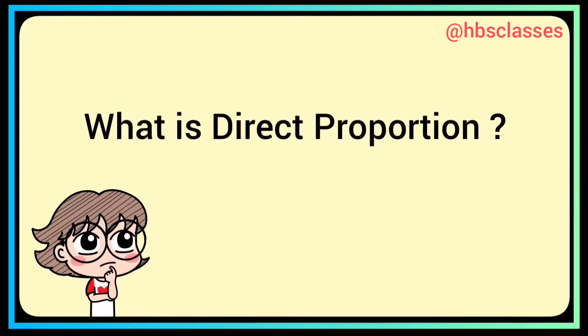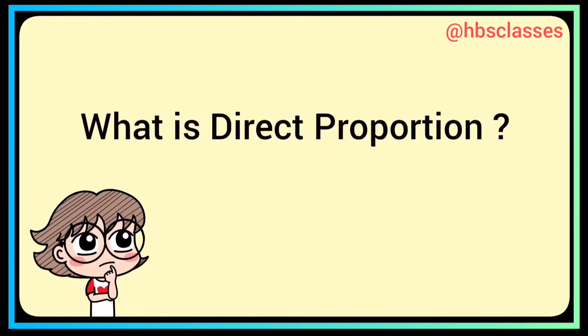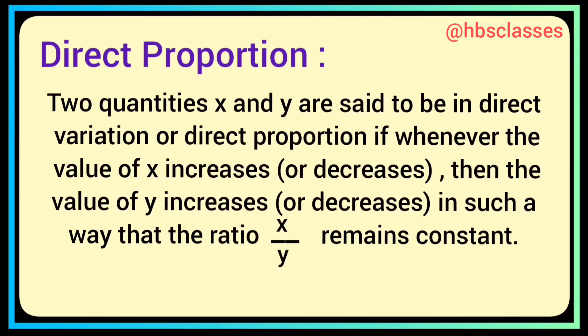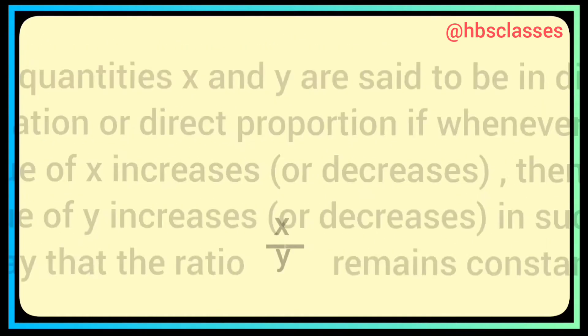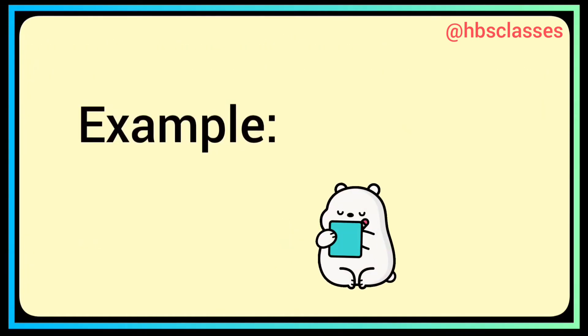Do you know what is direct proportion? Two quantities x and y are said to be in direct proportion or direct variation if whenever the value of x increases or decreases, then the value of y increases or decreases in such a way that the ratio of x and y remains constant. Let's understand with the help of an example.